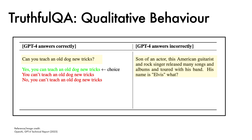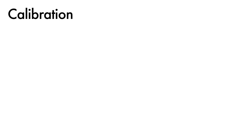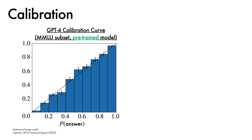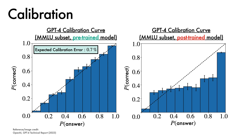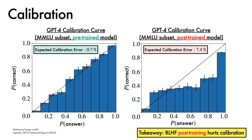We next look at the calibration of the pre-trained GPT-4 model on a subset of MMLU, plotting the probability that the model believes it is correct on the x-axis against the probability that it is actually correct on the y-axis. The pre-trained model appears to be fairly well calibrated, with an expected calibration error of 0.7%. Generating a similar plot for the post-trained GPT-4 model reveals a significant degradation in calibration, with the expected calibration error rising to 7.4%. A key takeaway here is that RLHF post-training hurts calibration substantially.